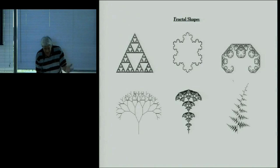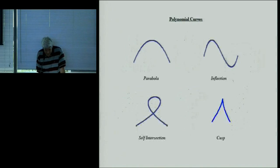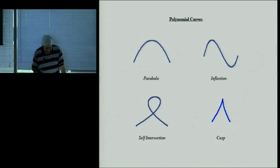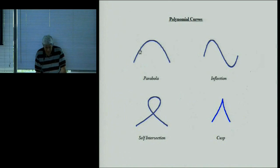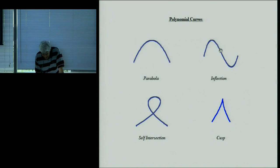These are fractals — they look a little bit complicated, but we'll talk about how to generate them. And here are polynomials — fairly simple objects. Here we have a parabola. You might say the parabola is itself self-similar: pretty much any piece of the parabola looks like any other piece. So maybe it shares that property with fractals.